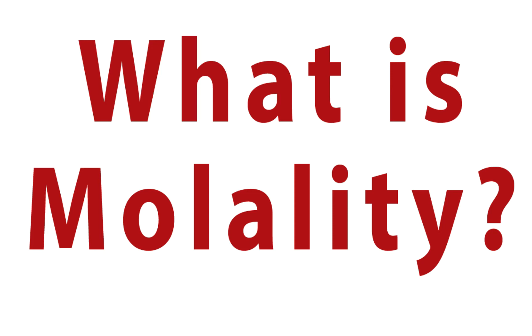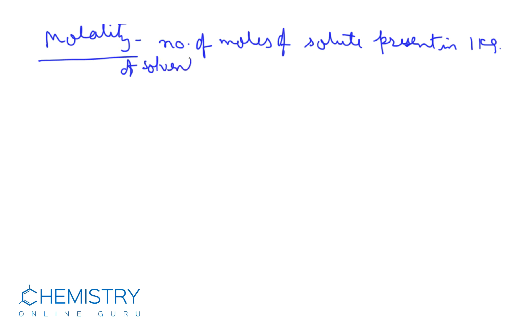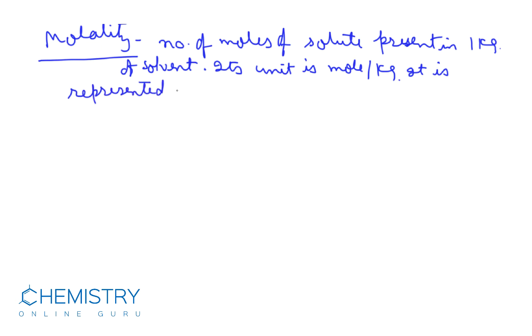Welcome to chemistryonline.guru. Today we will discuss molality. It is a unit of concentration, defined as the number of moles of solute present in 1 kg of solvent. Its unit is mole per kg, and it is represented by small m.